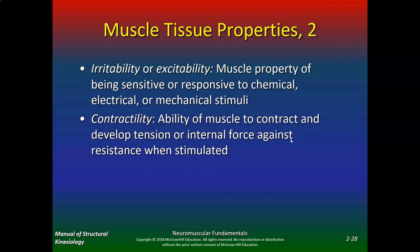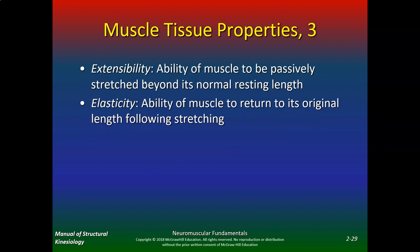Contractility is the ability of a muscle to contract and develop tension or internal force against resistance when stimulated. Extensibility is the ability of the muscle to be passively stretched beyond its normal resting length. Elasticity is the ability of muscles to return to their original length following stretching. From an injury standpoint, we want good extensibility and good elasticity in all of our muscles.